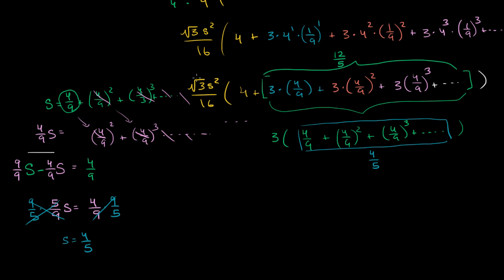Now let's go to our original expression so we don't lose track of what we're doing. We have the square root of 3, √3 s²/16, and then we have this 4 here, plus this whole thing, which simplified to 12/5.